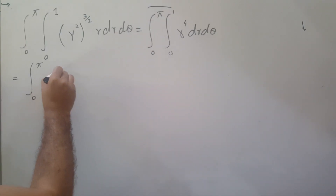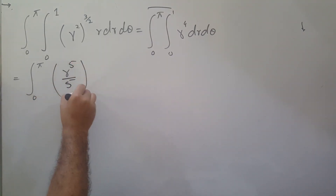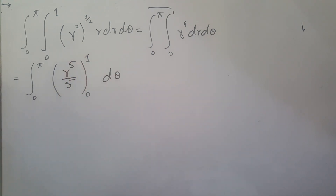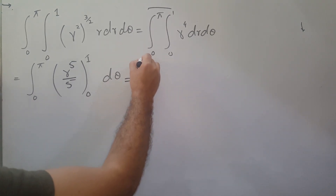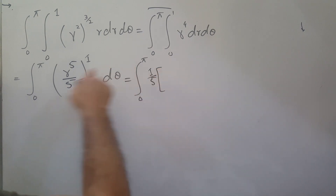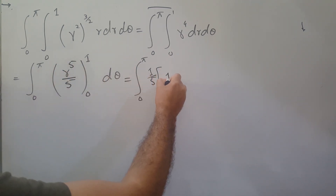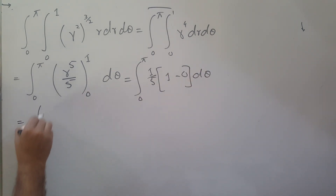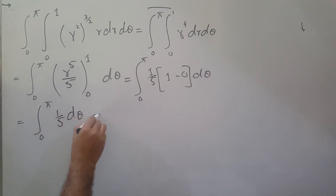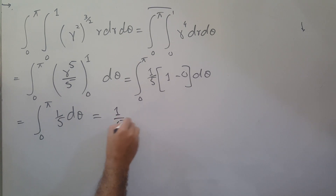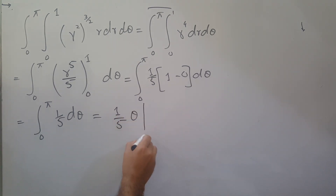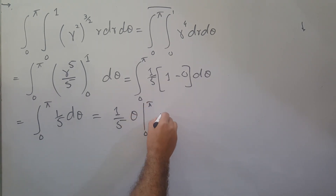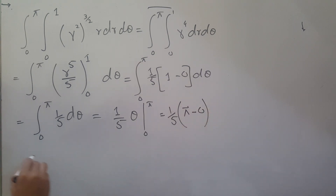Integrating r⁴ with respect to r gives r⁵ over 5, evaluated from 0 to 1, d theta. Substituting the limits: 1 over 5 times (1 to the power 5 minus 0 to the power 5) equals 1 over 5. We are left with the integral from 0 to pi of 1 over 5 d theta, which gives 1 over 5 times theta evaluated from 0 to pi. So the answer is 1 over 5 times (pi minus 0), which equals pi over 5. Thank you very much.